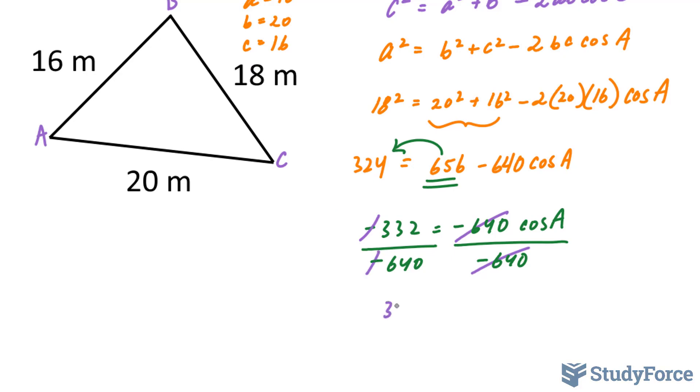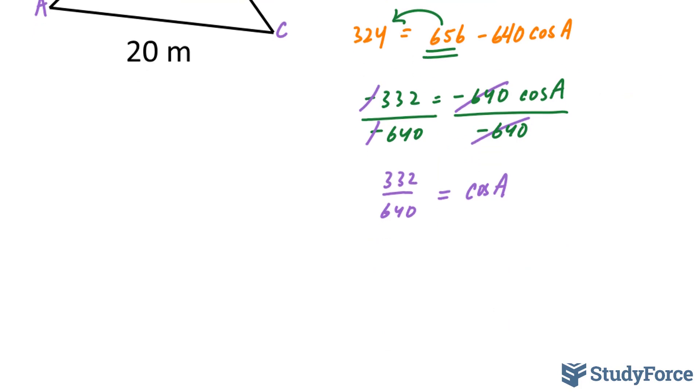So I'm just going to leave it as 332 over 640 without doing anything else, do not even evaluate this. And I'm going to explain to you why. On the right side, we're left with cos A. A lot of students make the mistake of thinking that our angle is the answer to this, but it's not. To find your angle, you actually have to use inverse cosine. And if you use inverse cosine, you'll end up with an expression that looks like this. And I said earlier, do not evaluate this.